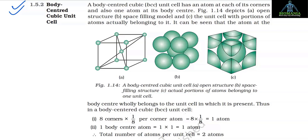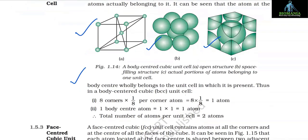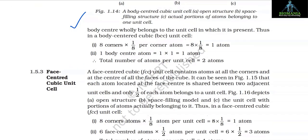1.5.2 Body-Centered Cubic (BCC) Unit Cell. A BCC unit cell has an atom at each corner and one atom at its body center. The atom at the body center wholly belongs to the unit cell in which it is present. Thus in a BCC unit cell: 8 corner atoms × (1/8) per corner atom = 1 atom; 1 body center atom × 1 = 1 atom. Total number of atoms per unit cell = 2 atoms.